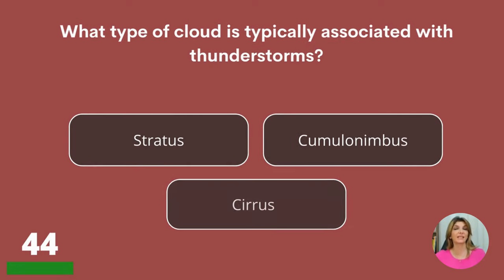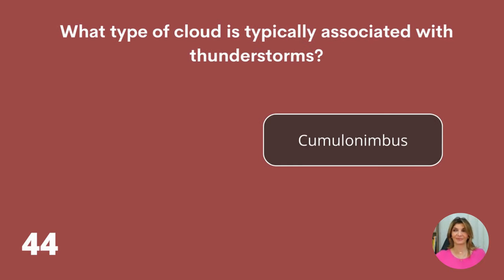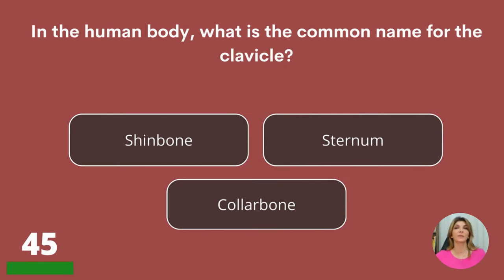What type of cloud is typically associated with thunderstorms? Stratus, cumulonimbus, or cirrus? In the human body, what is the common name for the clavicle? The shin bone, the sternum, or the collarbone? The collarbone.